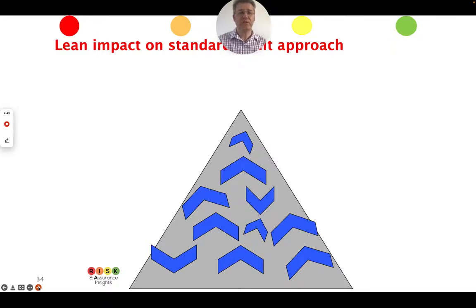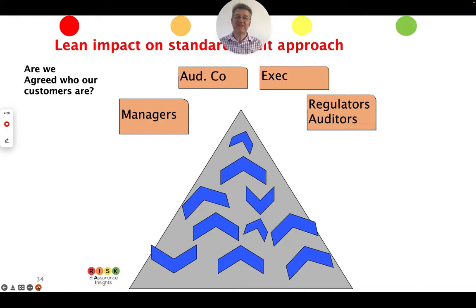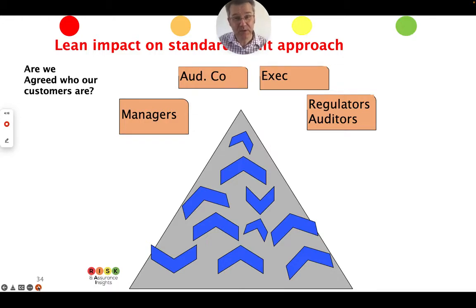Based on all the things that we've learned in terms of background and in terms of lean, the key idea around lean auditing is to ask: who are the real key customers for an internal audit department? Is it the audit committee? Is it executive managers? Is it the managers that we're auditing? Or what's the role in relation to regulators and auditors? Or is there somebody else we need to be thinking of when it comes to our key customer?